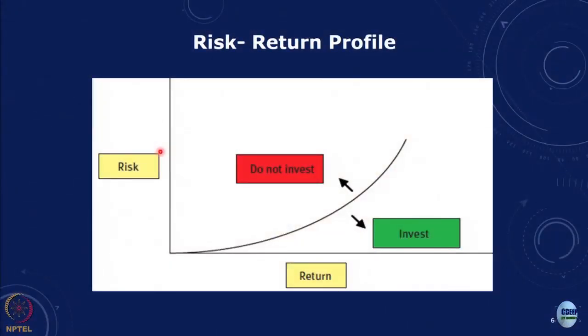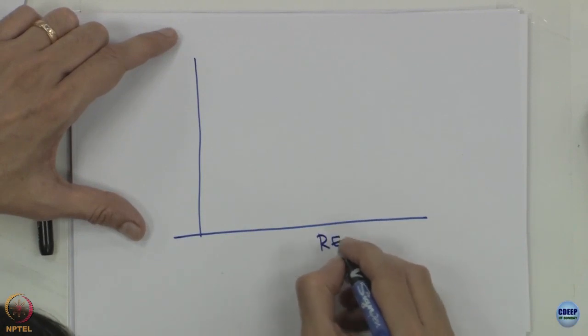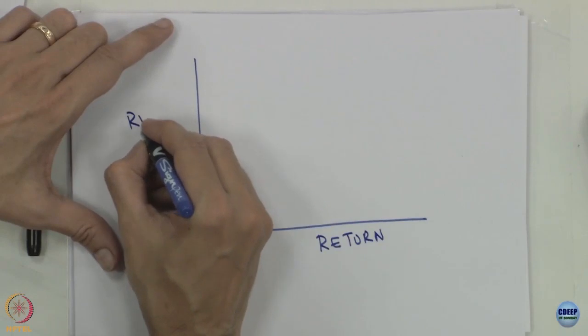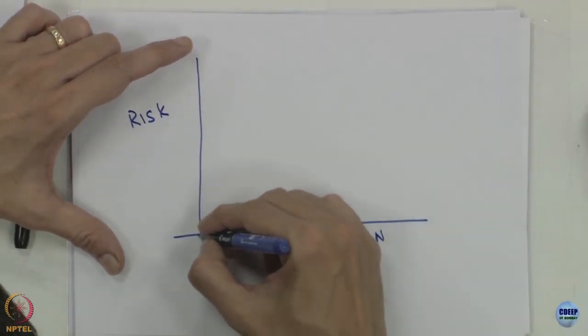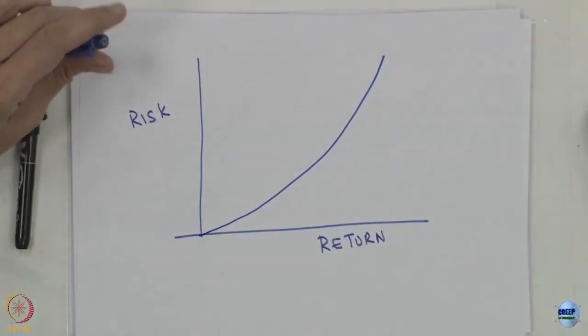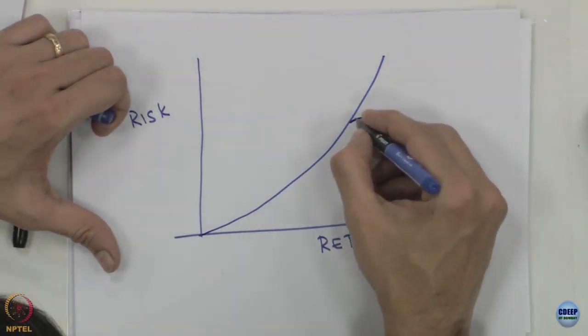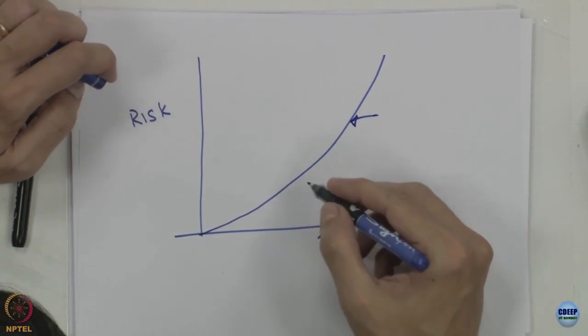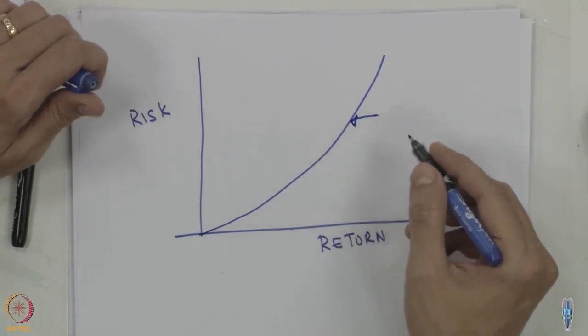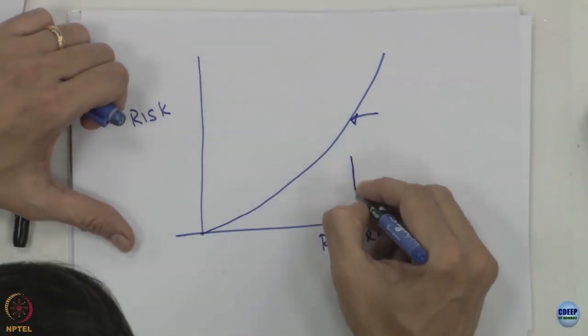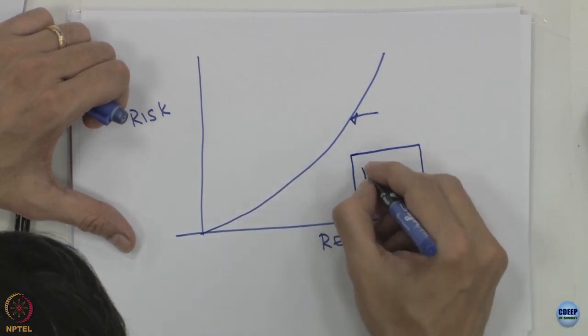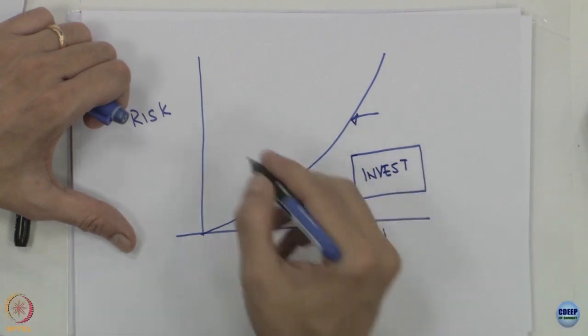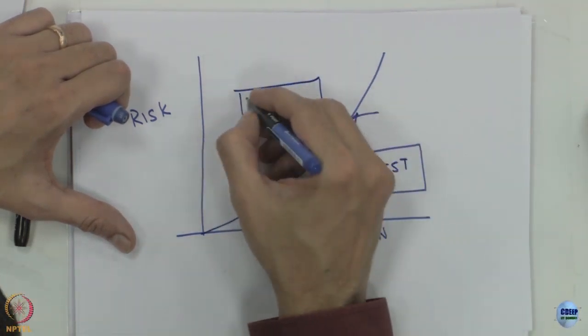Let us look at a bit of background and history. Before that, typically what will happen is that there will be a risk-return profile. For any project, we get some returns and there are certain risks. There is an acceptable risk threshold for a given return — if the risk is less than that threshold, we invest; if it is more, we do not invest.